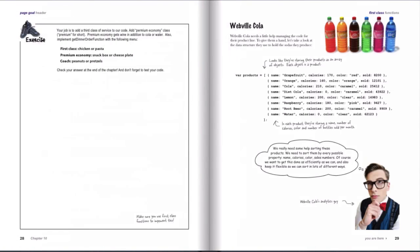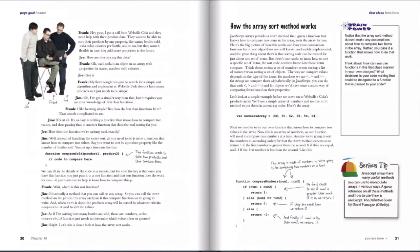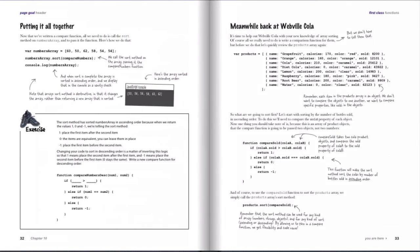Once you get through that, we then take you through a concrete example of how first-class functions are used in the JavaScript language itself by looking at the sort method of arrays. We're helping out Webville Cola in this example by sorting all the Cola products that they have in their lineup. To do that, we need to create a bunch of functions that we can use to pass to the sort method. This method is a handy thing to have because by simply passing in a function to the sort, that makes it easy to sort a collection of anything.